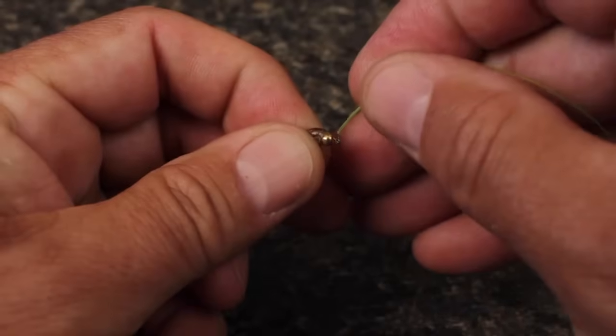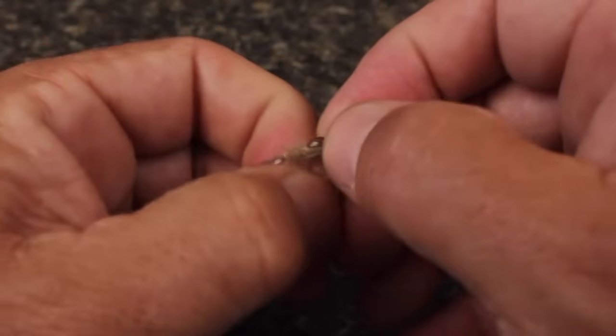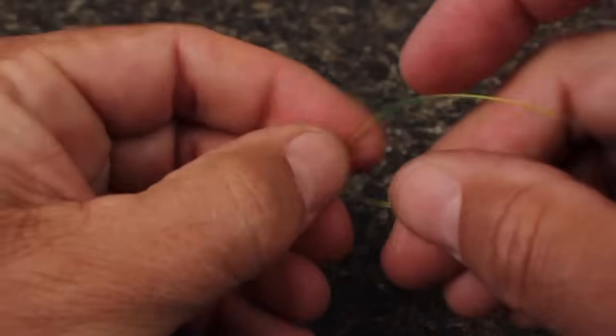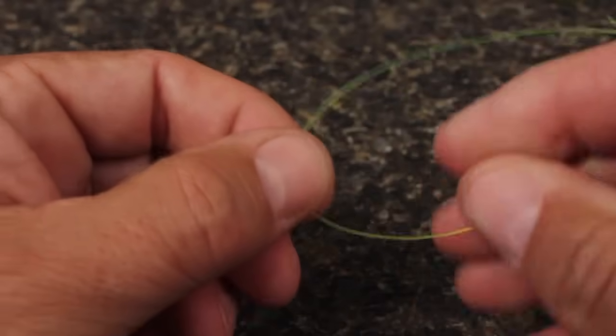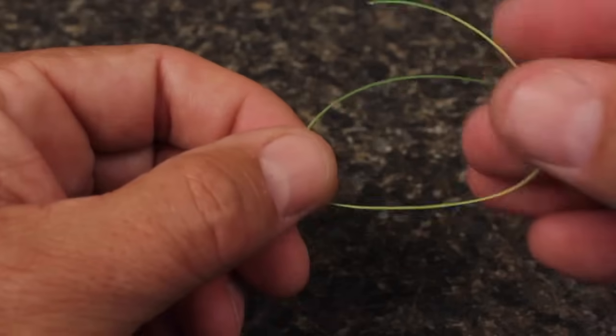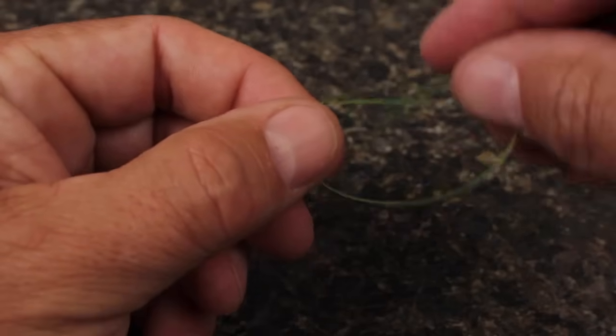Here's what it looks like with 15-pound test mono tied on a size 14 Hare's Ear Nymph. Again, run the line top down through the eye and then cross over and around the running line.